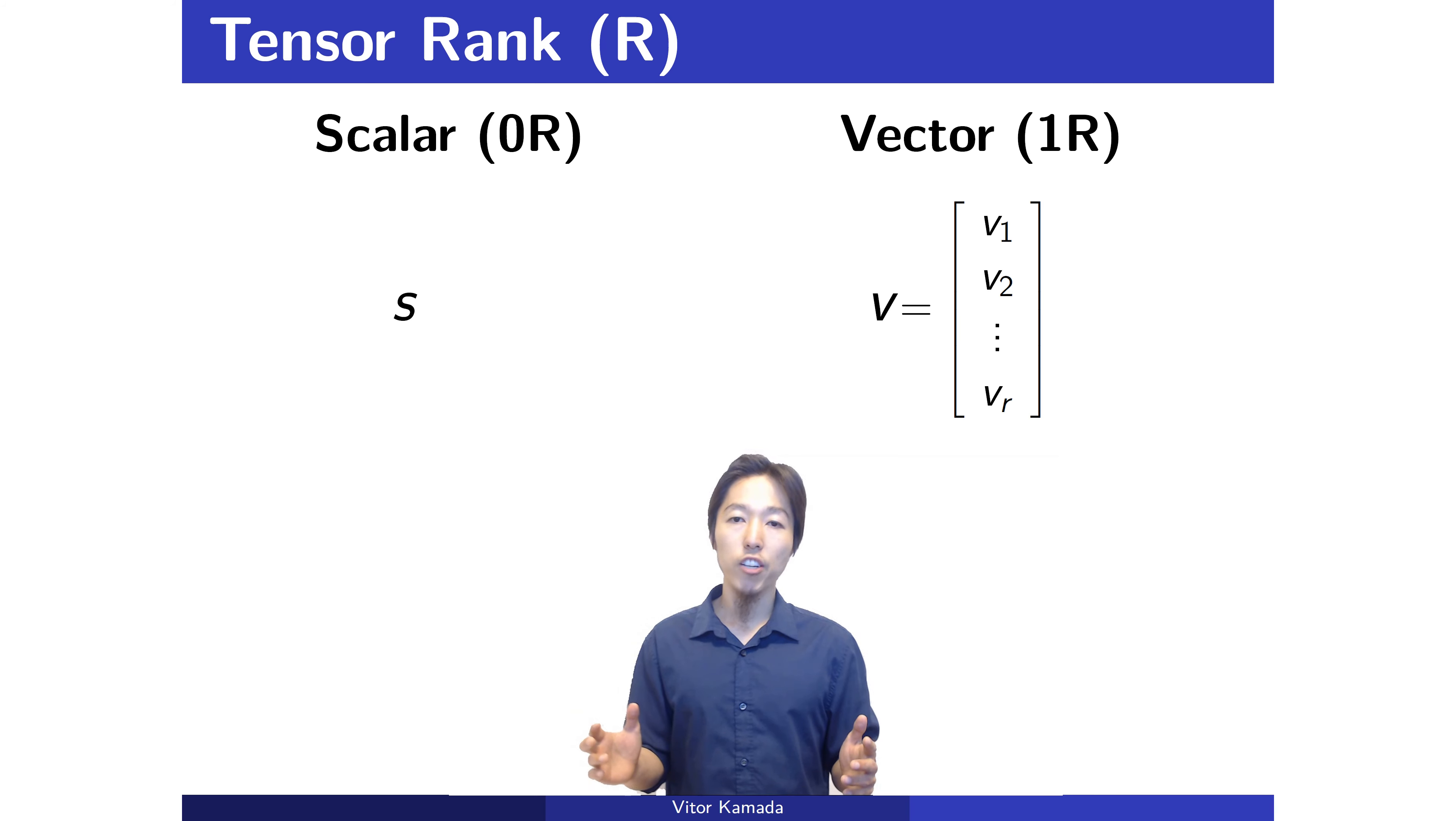If you need the direction, you have to use a vector. A vector is just an array of numbers, a tensor of rank one.